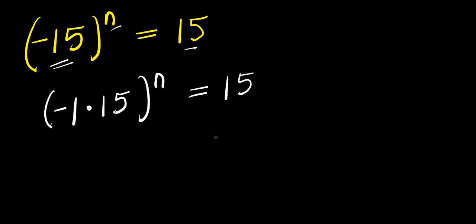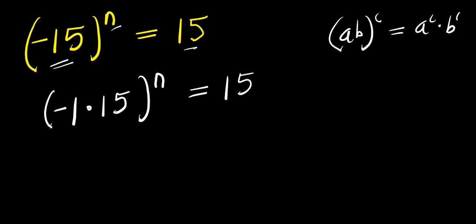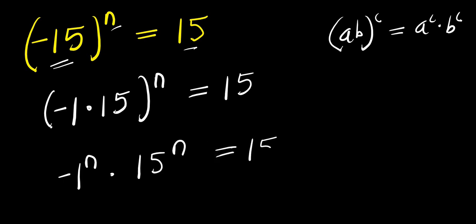From here, what I can do will be to apply this identity: if you have a times b raised to the power of c, this equals a to the power of c times b to the power of c. So you have negative 1 to the power of n times 15 to the power of n equals 15.